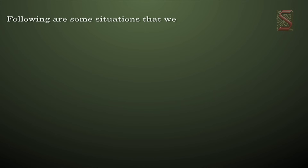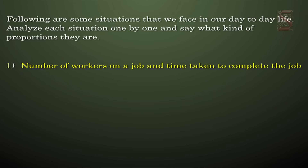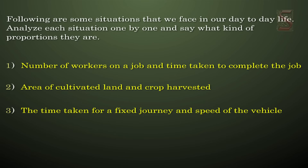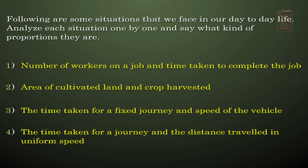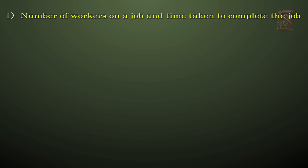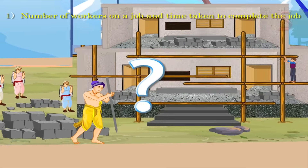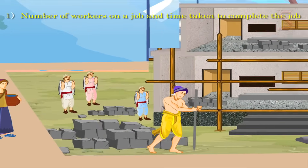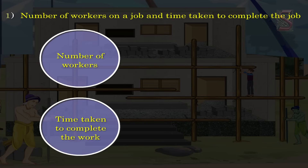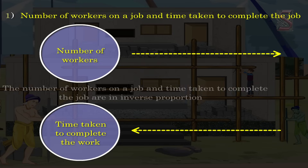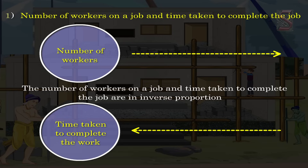Here are some situations from day-to-day life. Analyze each and identify the type of proportion. First: number of workers on a job and time taken to complete the job. Suppose 5 workers can do a job in 40 minutes. If 10 workers do the same job, the time taken will decrease. As the number of workers increases, time taken decreases. Hence, number of workers and time taken are in inverse proportion.